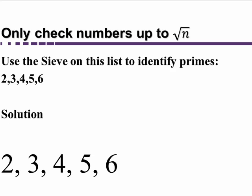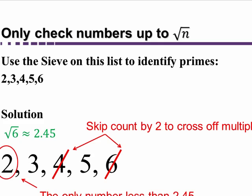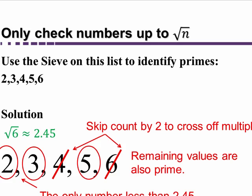So let's use the sieve on a very short list first to see how it works. We're going to look at the numbers 2, 3, 4, 5, and 6. We know 2, 3, and 5 are primes, but let's see how the sieve applies here. The key is to check numbers up to the square root of the largest number — the square root of 6 is about 2.45. So 2 is actually the only number less than 2.45. We skip count by 2, crossing off the composite multiples of 2, and then there's nothing else to do. The remaining numbers are prime.